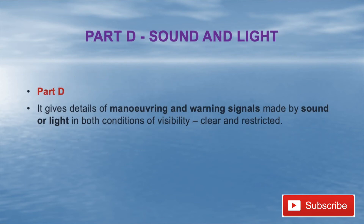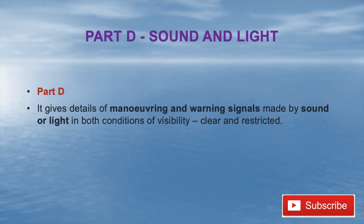Part D covers Sound and Light Signals. It gives detail of maneuvering and warning signals made by sound or light in both conditions of visibility — clear and restricted visibility. There are different sound signals and different light signals covering what warning signals a vessel should exhibit so that other vessels can understand what is happening.